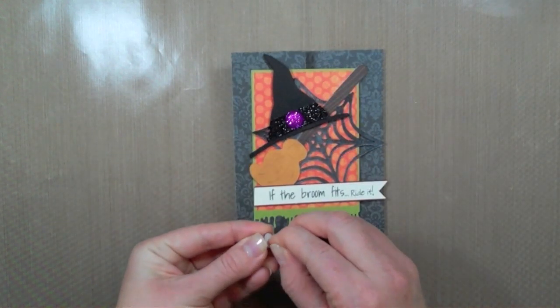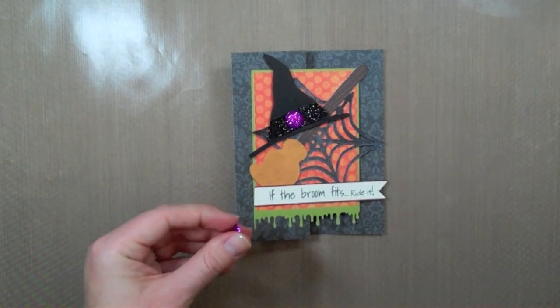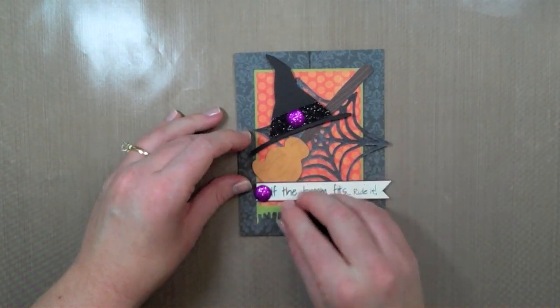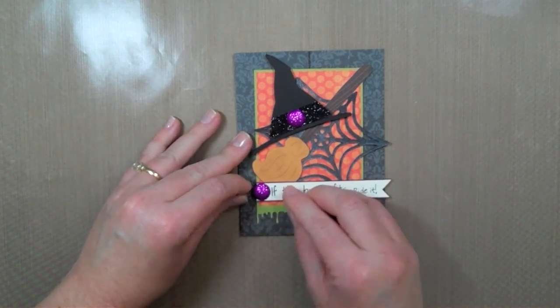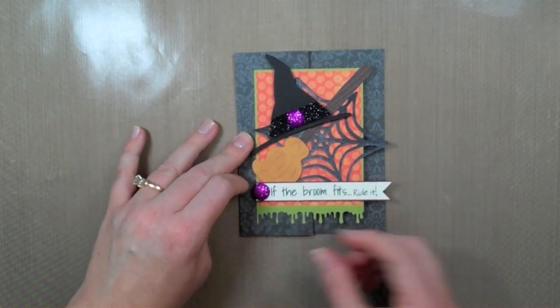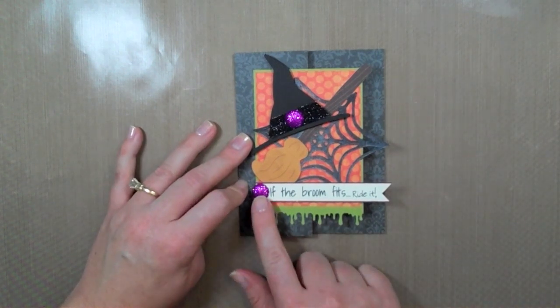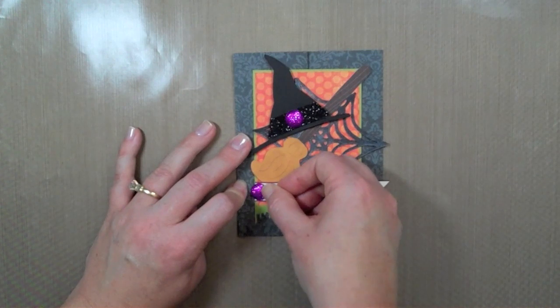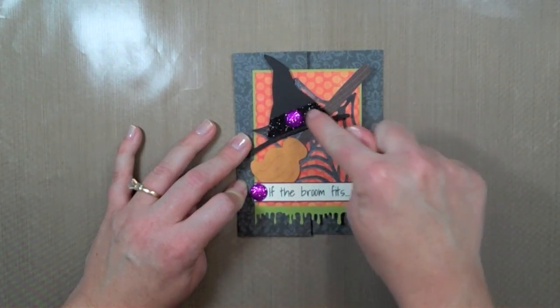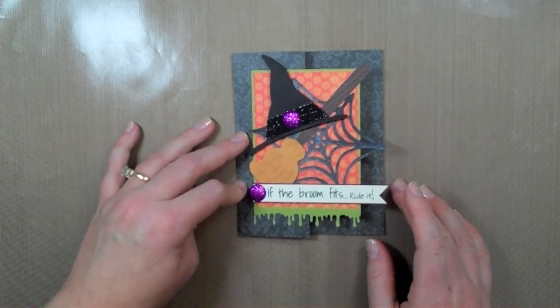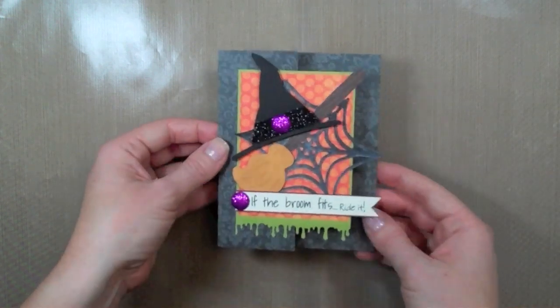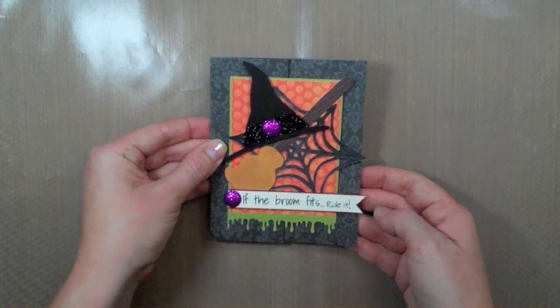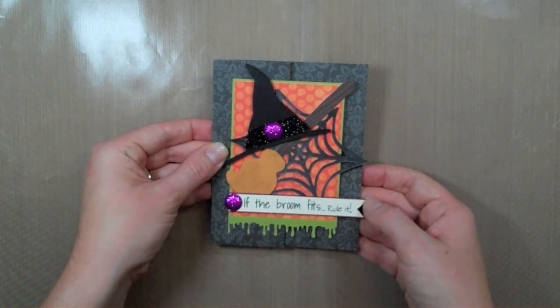And then my final step is just going to be to take this purple glitter accent again I would call it a brad but it's not really a brad it's more like a button or something and I am just going to add that to the beginning of the sentiment and once again it's carrying that purple into three different places on the card so that it looks more purposeful. So there is my card for today I hope you enjoyed it and I hope you have a wonderful day thanks for watching.